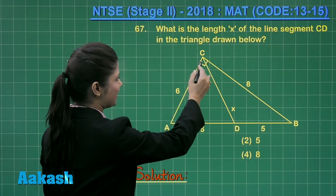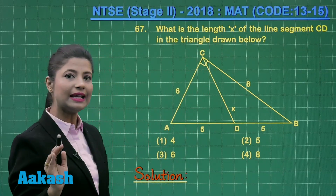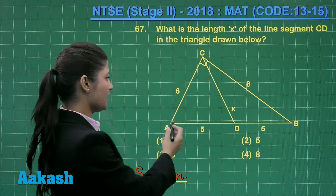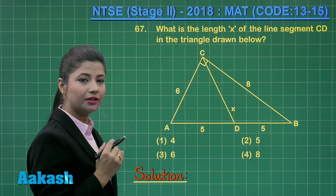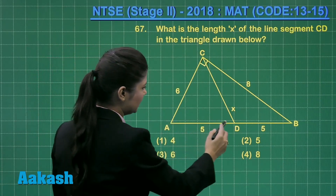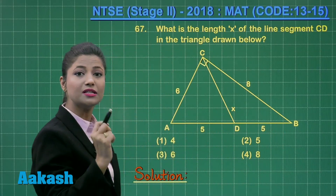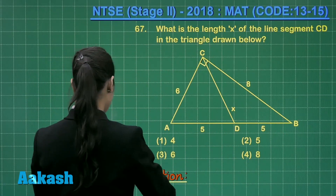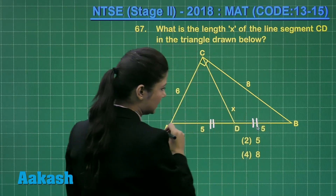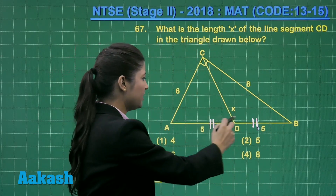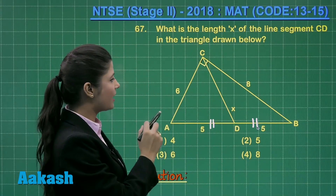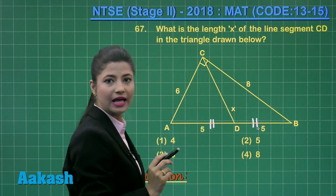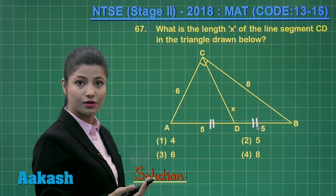Here you can clearly observe that angle C is 90 degrees. It is a right angle triangle, and a right angle triangle lies in the semicircle where the hypotenuse acts as the diameter. Here AD and BD are equal to 5, which means point D is the midpoint of AB. So you can consider that AD is equal to BD, and AB is the diameter of the semicircle in which triangle ABC is drawn. D is the midpoint of the diameter, which is the centre of the circle.